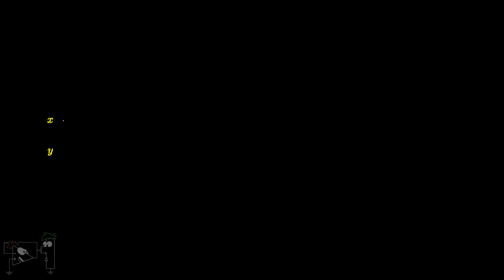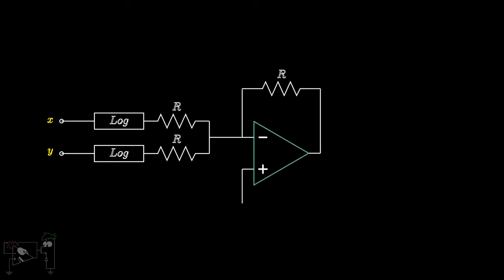So let's build the circuit. We'll first pass the two signals through log amplifiers. Then we add these up by using a summing amplifier. In the end, we pass this result through an antilog amplifier to get the product. And that's it. We have built our second analog multiplier.